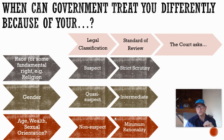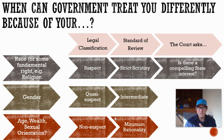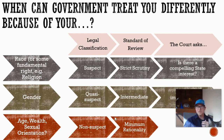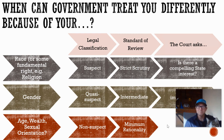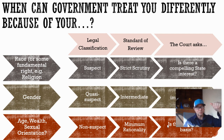When the court applies the strict scrutiny test, it asks: is there a compelling state interest? That language comes up in cases like Yoder v. Wisconsin as well. For the intermediate standard of review, the question is whether there is an important state purpose — similar but distinct from a compelling state interest. For the minimum rationality test at the bottom, the question is simply: is there a rational basis for the discrimination?